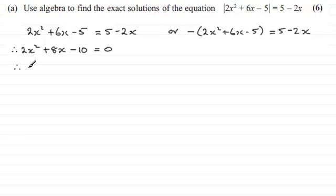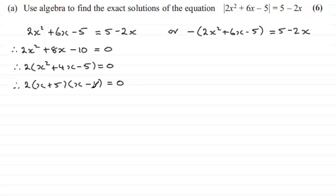If I pull out a factor of 2, we've got x squared plus 4x minus 5 equals 0. Then just factorise the quadratic and you get two brackets equaling 0: x plus 5 times x minus 1. That leads to x equaling minus 5 or x equaling 1. So we've got that set of values.